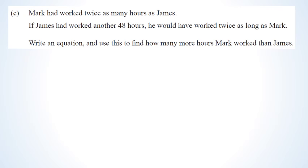In this question: Mark has worked twice as many hours as James, and if James had worked another 48 hours, he would have worked twice as long as Mark. If James works j hours, then Mark works 2j. So the first equation is m equals 2j.